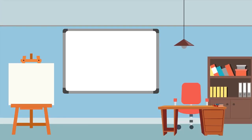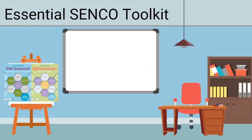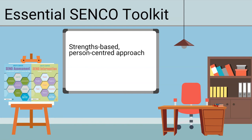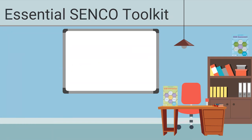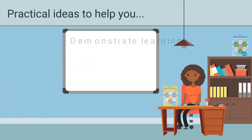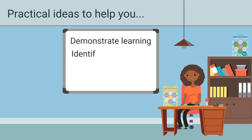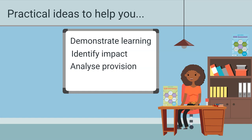The second resource is the Essential SENCO Toolkit. This introduces a strengths-based, person-centred approach that underpins all our conversations around SEND and supports further in-depth planning with children and young people, their families and education-setting staff. It offers practical ideas to help you demonstrate learning, identify the impact support is having and analyse whether the current provision for a learner is effectively tackling the barriers to learning that they face.